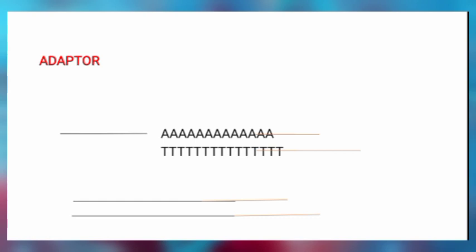To summarize: a linker has two blunt ends, and we use a Restriction Enzyme to cut it to generate a sticky end to ensure easy incorporation of the cDNA molecule into the plasmid. Whereas an adapter already has its own sticky end, so there is no need to use a Restriction Enzyme to cut anything, which avoids the risk of cutting within the cDNA molecule itself.